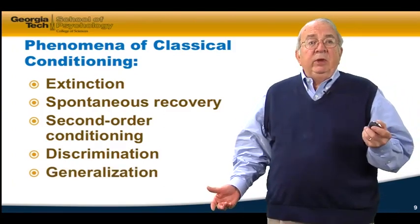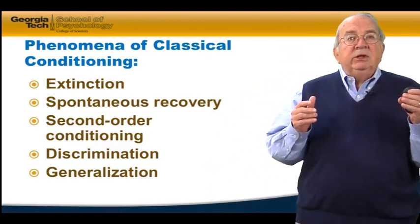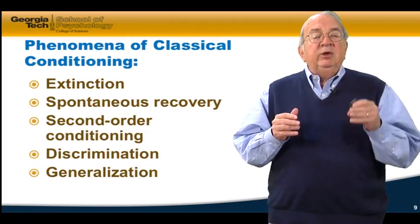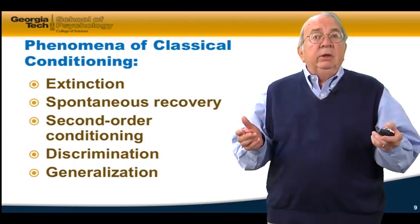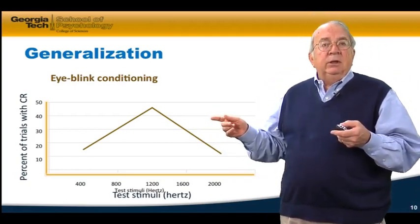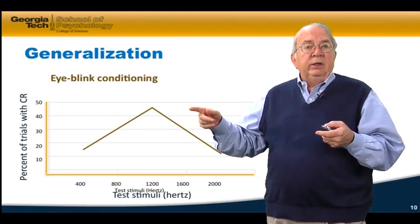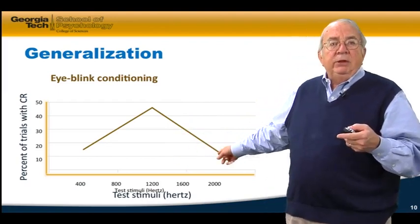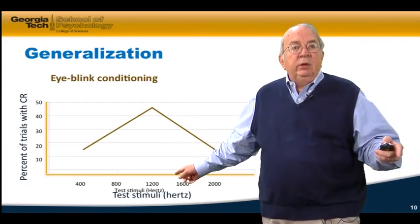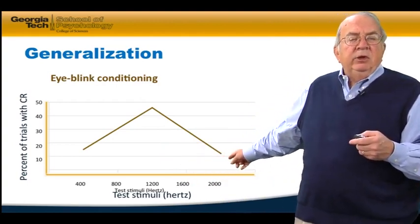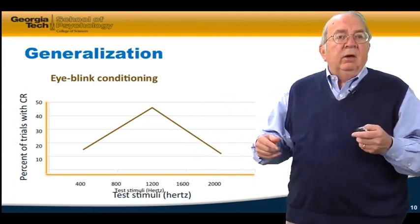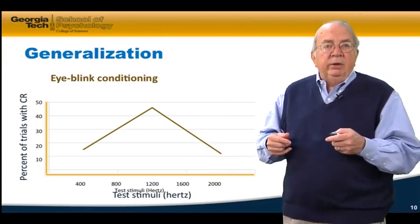We can also see stimulus generalization. If we present a new stimulus that's similar to the conditioned stimulus, it will also lead to the conditioned response. Here's a graph showing that the conditioned stimulus is 1200 hertz, and if you vary that stimulus away from the original, the conditioned response goes down depending on how different the new stimulus is. So if it's 2000 hertz or 400 hertz, you get a much smaller response than if it's 1600 or 800 hertz, which are closer to the conditioned stimulus of 1200. Generalization.